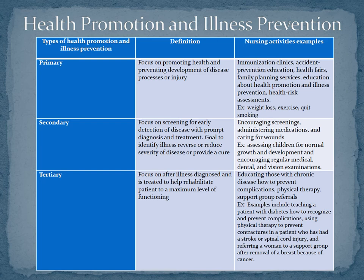The secondary type of prevention focuses on screenings for early detection of disease with prompt diagnosis and treatment. The goal is to identify illness, reverse or reduce the severity of the disease, or provide a cure. Nursing activities include encouraging screenings such as mammograms, yearly pelvic exams, and prostate exams; administering medications; caring for wounds; assessing children for normal growth and development; and encouraging regular medical, dental, and vision examinations.